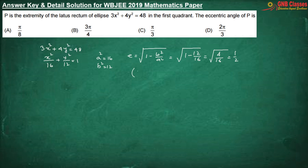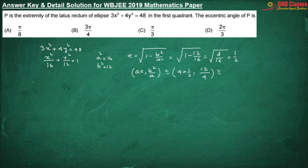The coordinate of the extremity of the latus rectum in the first quadrant will be (ae, b²/a), which equals — here a = 4, eccentricity = 1/2, b² = 12, a² = 16, so a = 4. That gives us the point (2, 3).